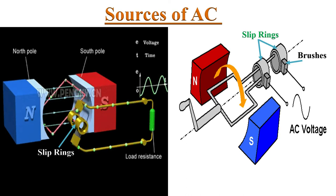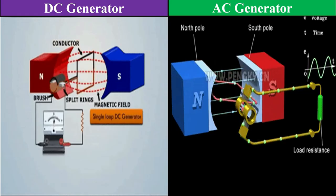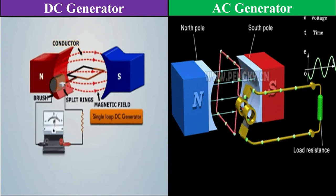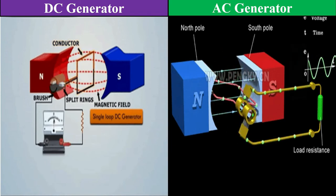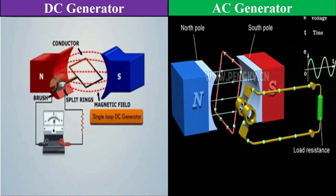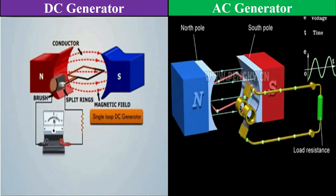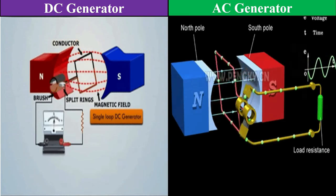The main constructional difference between AC generator and DC generator are their output connections. Both machines initially produces AC voltage.